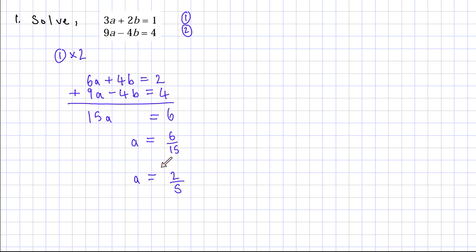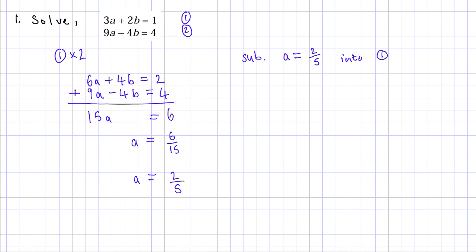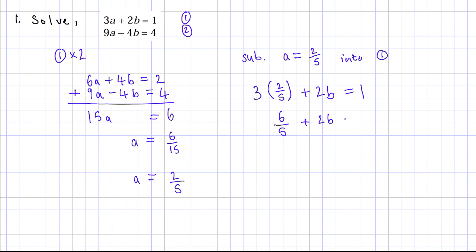Now I have my value for a. I need to substitute this into either equation to find b. I'll use the first equation because it has smaller numbers and looks easier. Substituting a equals 2 over 5 into equation 1: 3 times 2 over 5 plus 2b equals 1, which simplifies to 6 over 5 plus 2b equals 1.